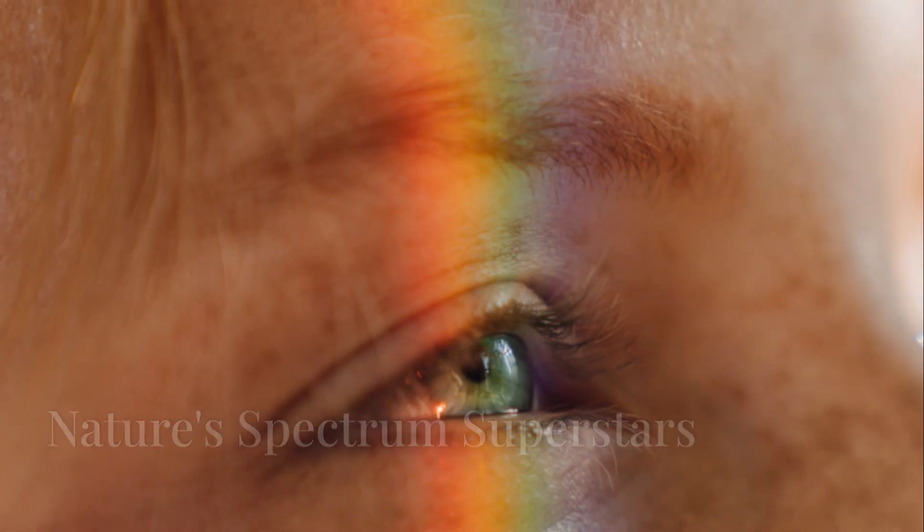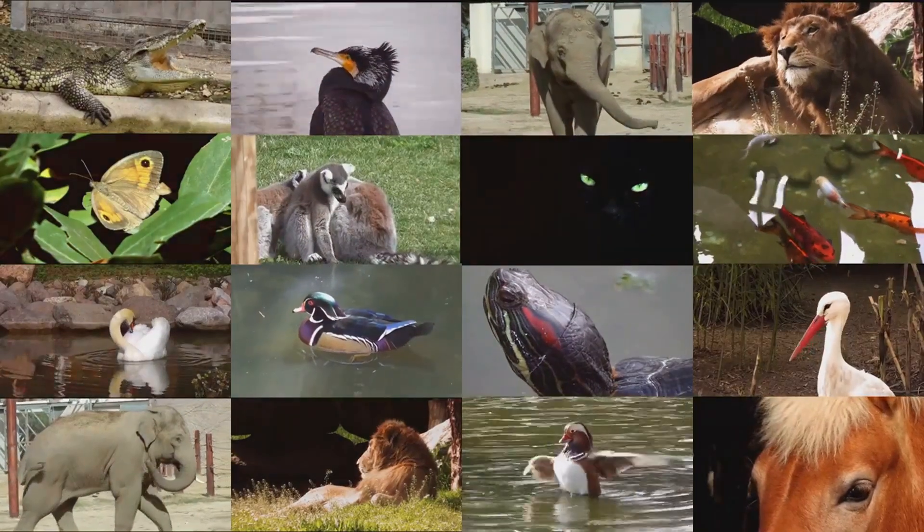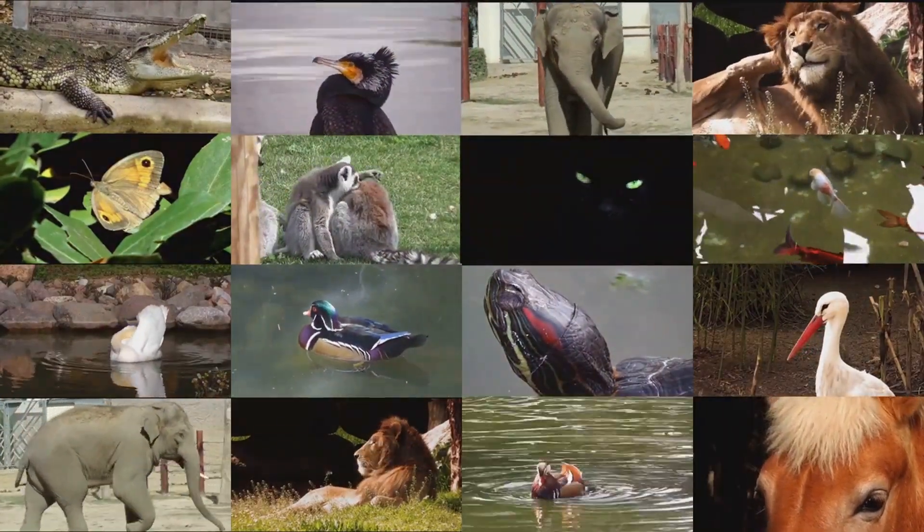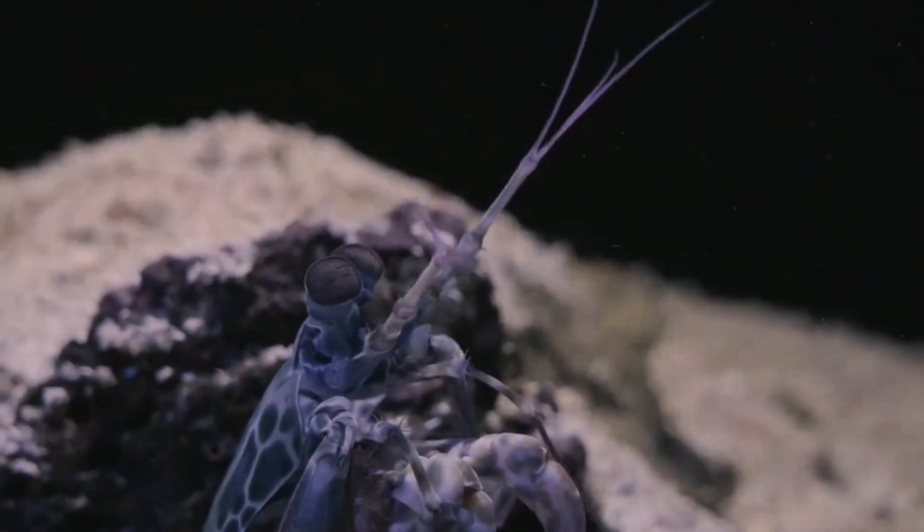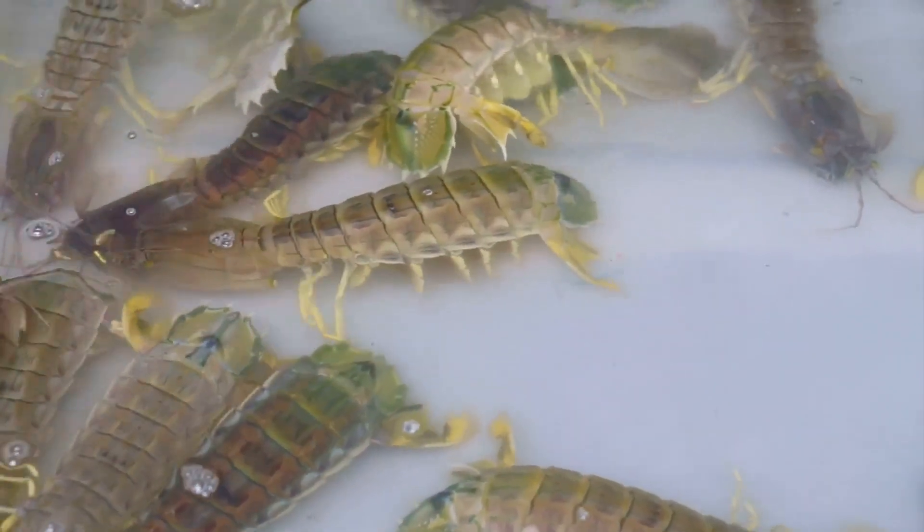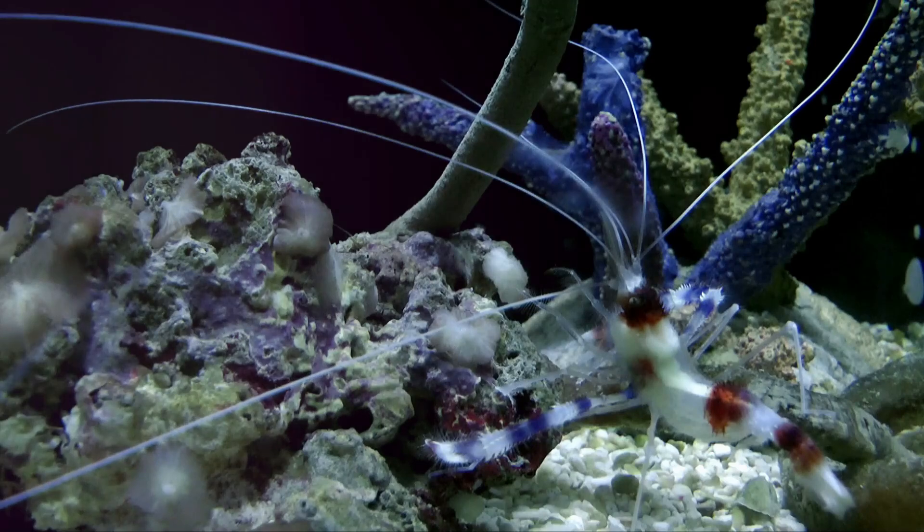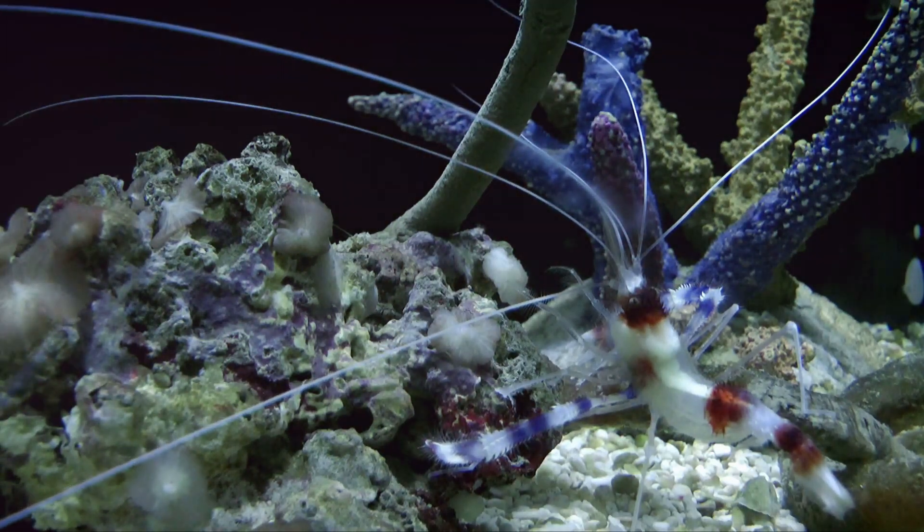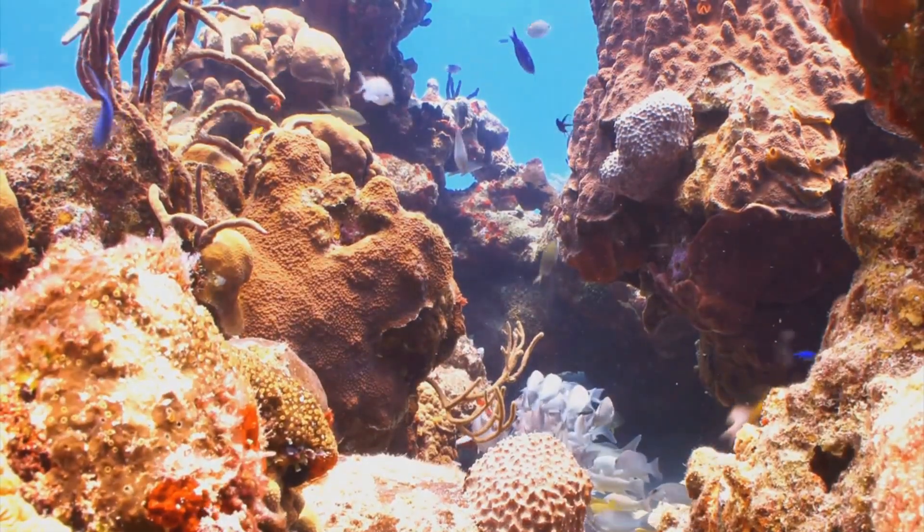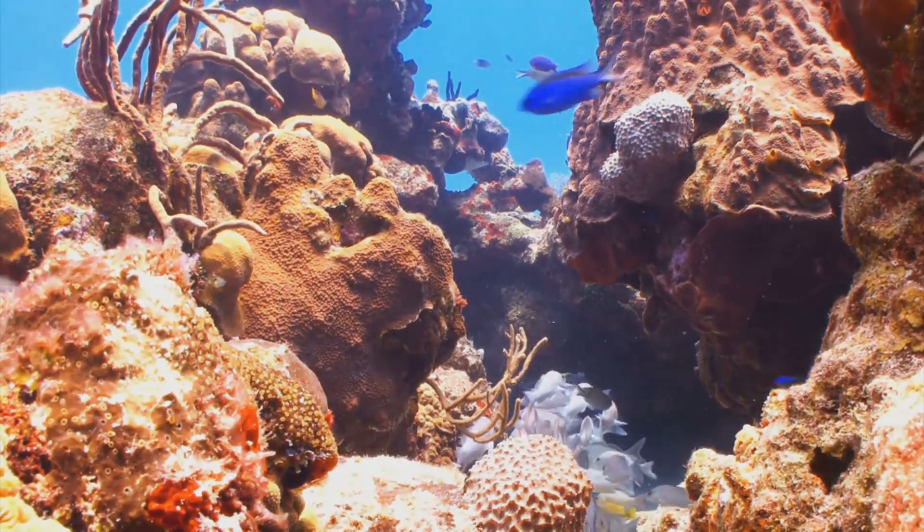While we humans are bound by our three-color vision, the animal kingdom is teeming with creatures that put our perception to shame. Take the mantis shrimp for example. This underwater marvel boasts 12 types of color receptors, allowing it to see ultraviolet, infrared and even polarized light. Imagine the psychedelic underwater world this creature must perceive.